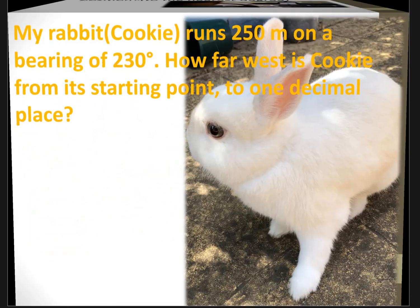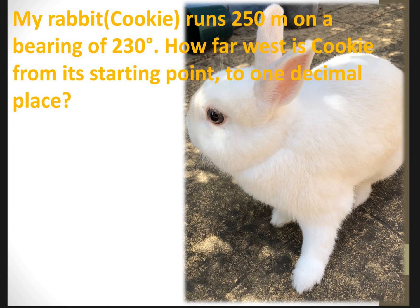Now I have a practice problem for you to try yourself. My rabbit Cookie ran 250 meters on a bearing of 230 degrees. How far west is Cookie from its starting point? Correct to one decimal place. I'll give you the answer — you can pause and try it yourself. The answer: the distance is 191.5 meters. Try to draw the diagram yourself and figure out the distance. Thank you for watching!